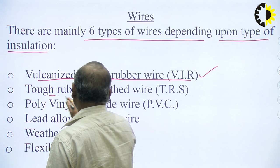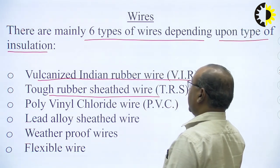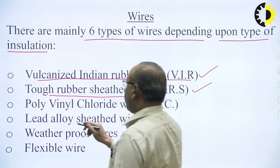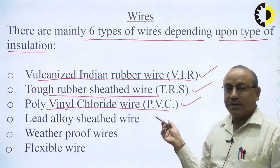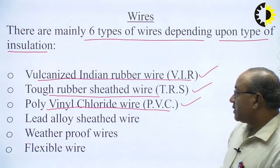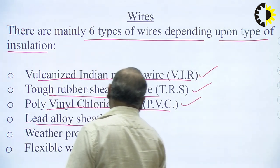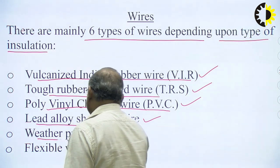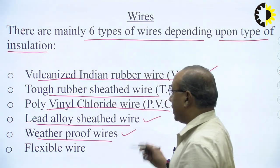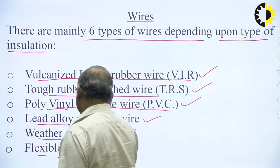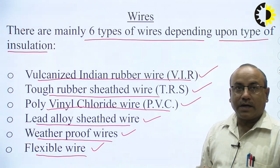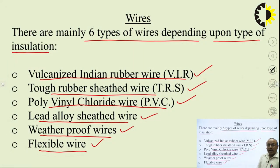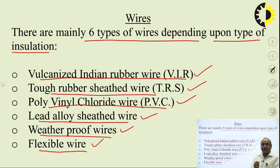The second type is Tough Rubber Sheath wire, abbreviated as TRS — that is again a type of insulation. The next type is Polyvinyl Chloride, PVC wire, another insulation type. Fourth is lead alloy sheath wire. Fifth is weatherproof wire, used in typical weather conditions. The last category is flexible wire, used for portable devices like laptops, mixer grinders, heaters, and electric irons — devices where portability is the issue.